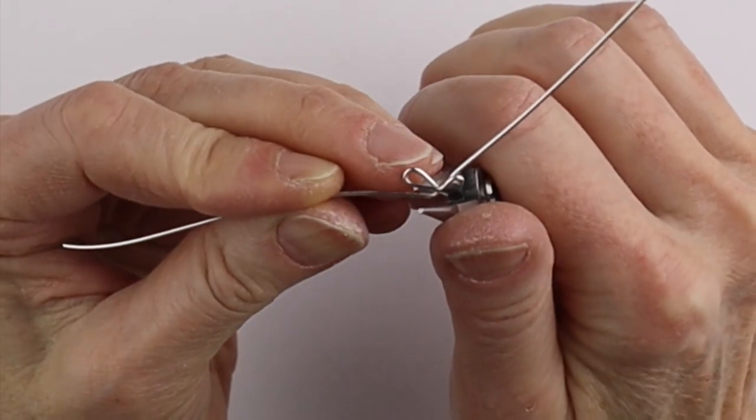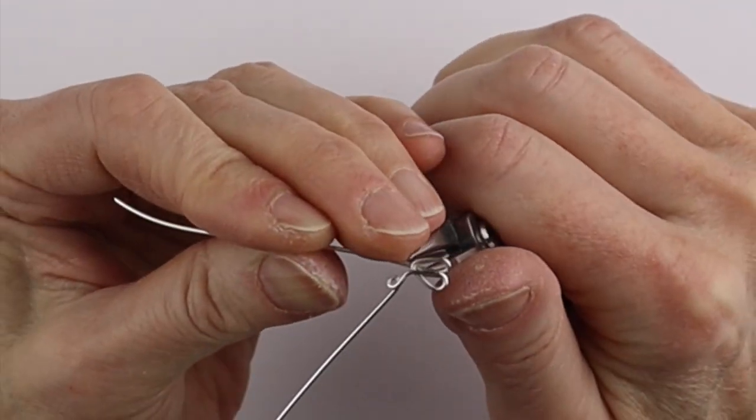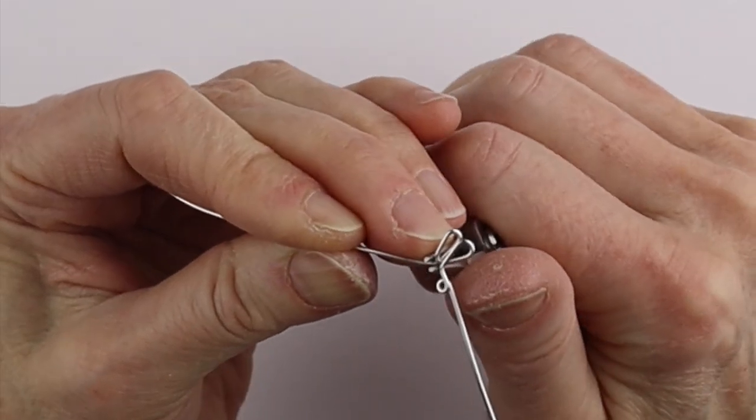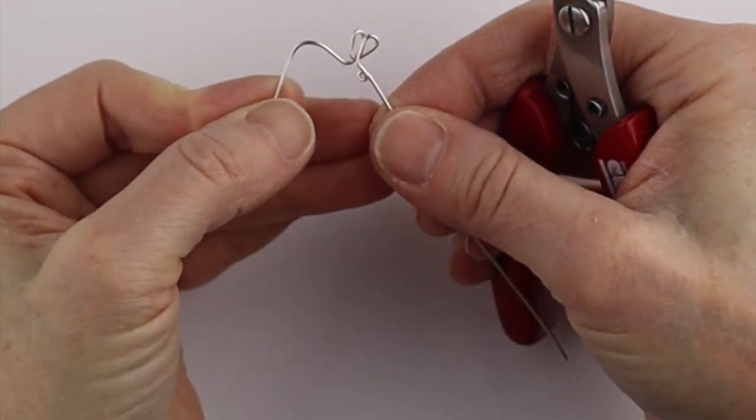Push it up again and twist it around for the second ear and then bend it going towards the back and curve it around with your thumb.